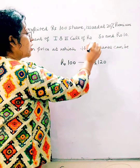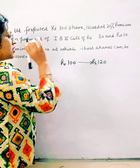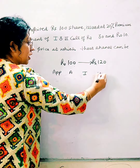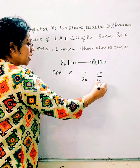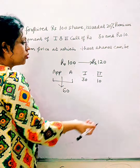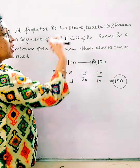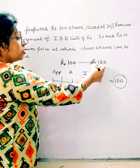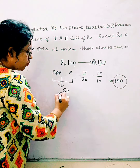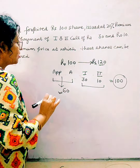The non-payment is on the first and second call of rupees 30 and 10 respectively. So the share of 100 rupees had 60 rupees received — because the premium is extra. The application and allotment received is 60 rupees. We don't need to consider the premium separately. We did not receive the remaining 30 or 40 rupees — we did not receive 60 rupees out of the full amount.